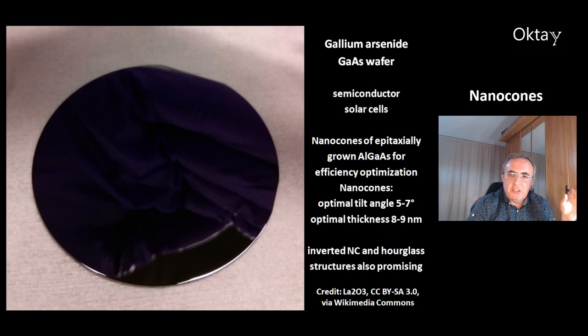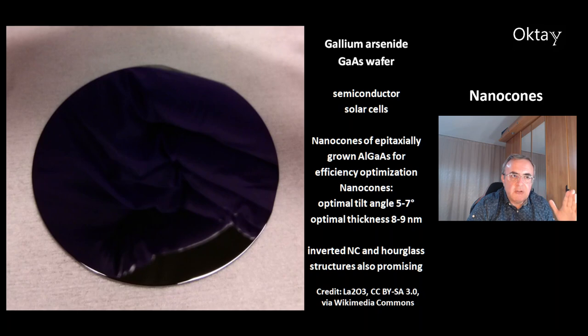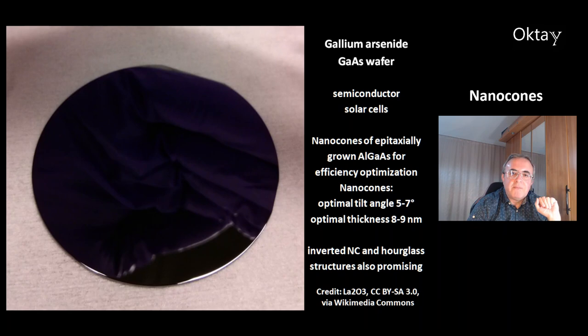Another compound is gallium arsenide (GaAs). This is a wafer of GaAs — another compound for semiconductors and solar cells. Nanocones of epitaxially grown aluminum gallium arsenide (AlGaAs) were used for efficiency optimization. For these types of nanocones, the optimal tilt angle is 5 to 7 degrees and the optimal thickness is 8 to 9 nanometers. There is also a version of inverted nanocones and hourglass structures, which are also very promising — for example, they have very good properties with light from different angles.